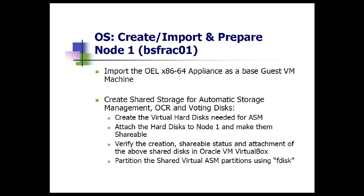Some of the steps during OS preparation include the installation of the packages, modifying configuration files with extra entries, and setting up your NTP or network time protocol daemon to be up and running — that's also a requirement as part of 11GR2. This also involves making changes to miscellaneous files such as your grub.conf, bash profile, and /etc/security/limits.conf. All of these are explained in quite a bit of detail in the guide.